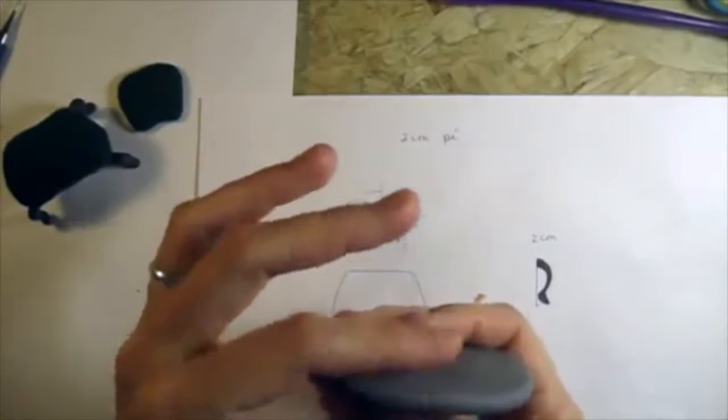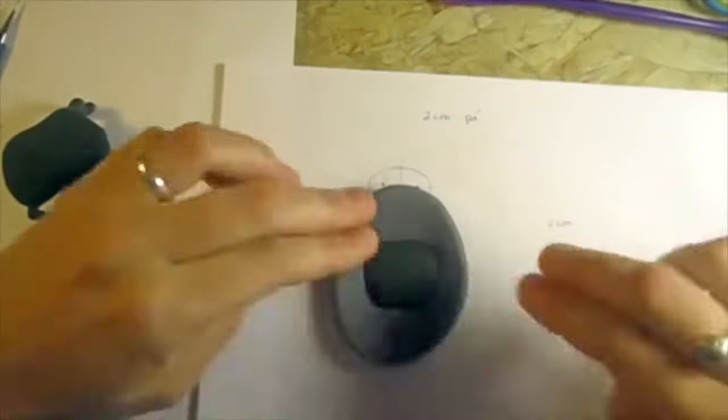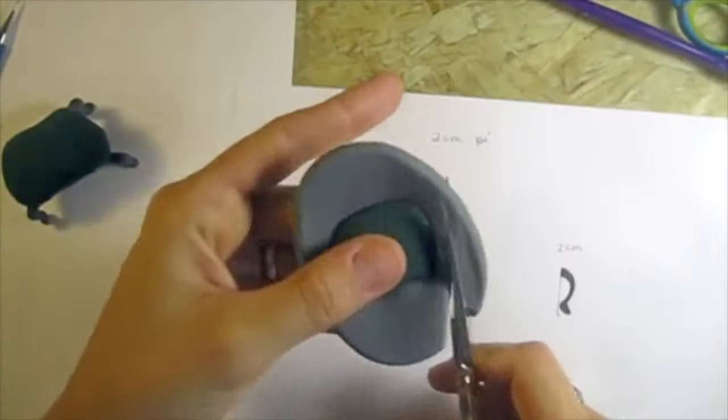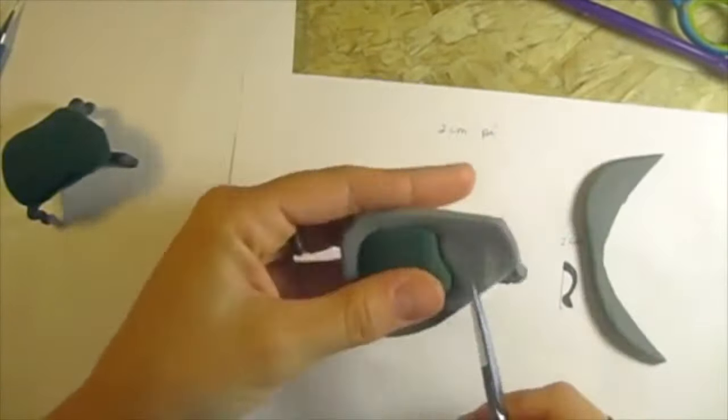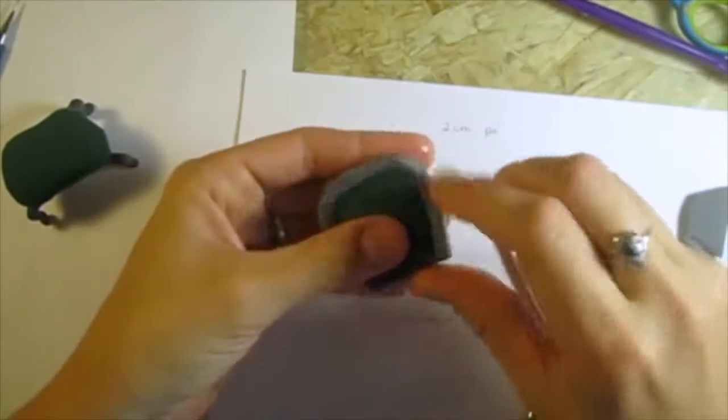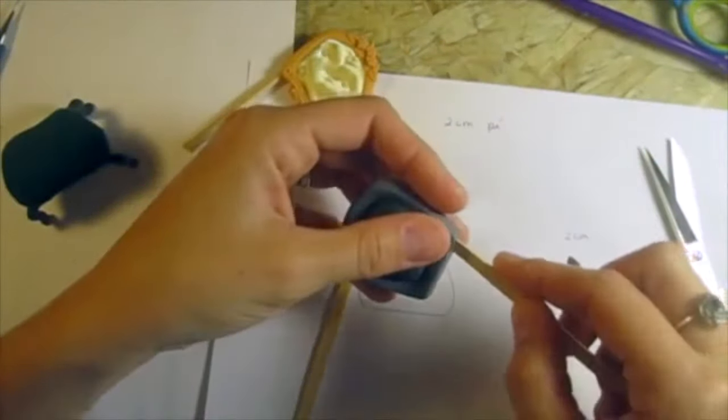Roll up a bit of clay, not too thin, and place the backrest cushion in the center. Cut it, leaving a border around. Smooth it out with water and place two sticks on the bottom.